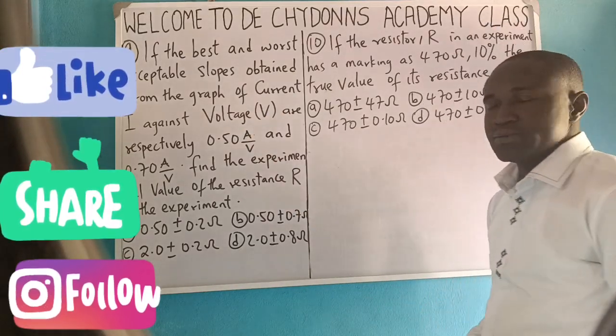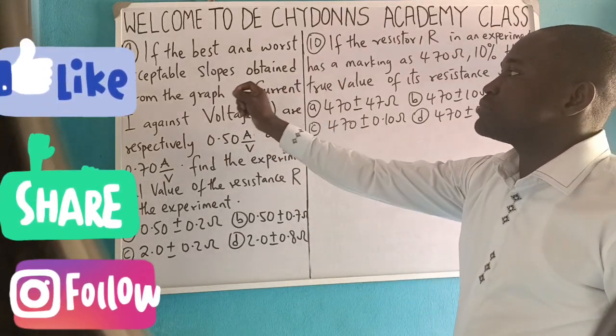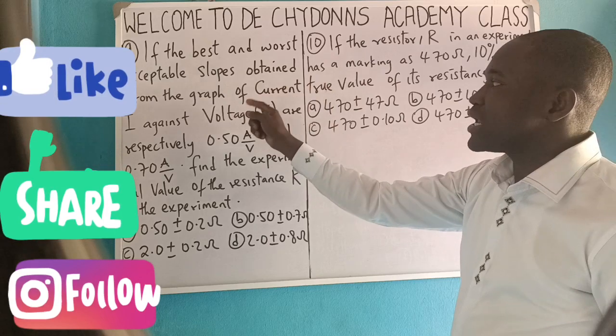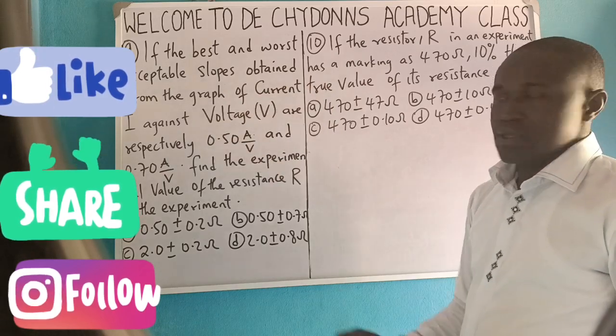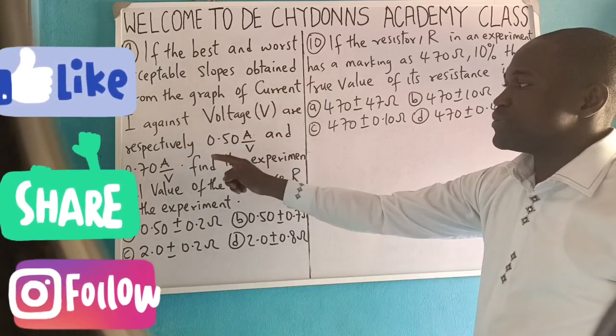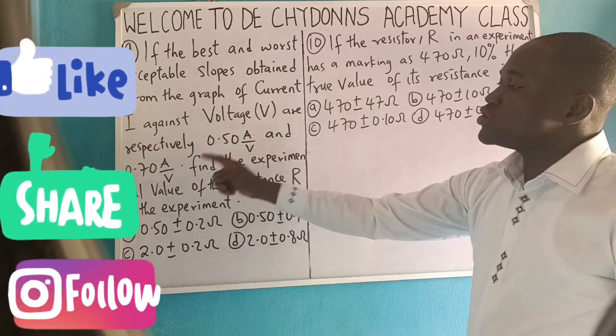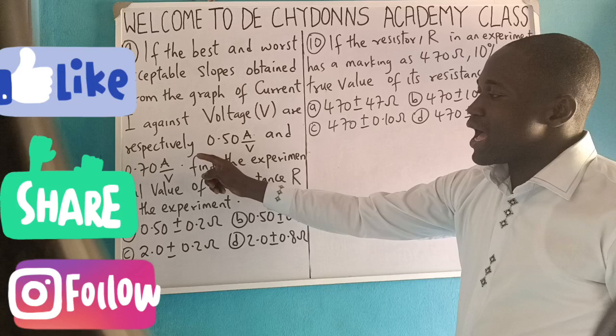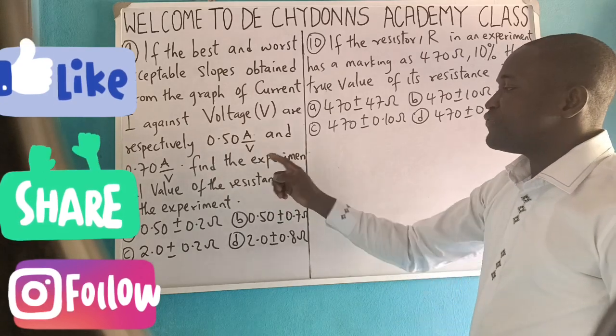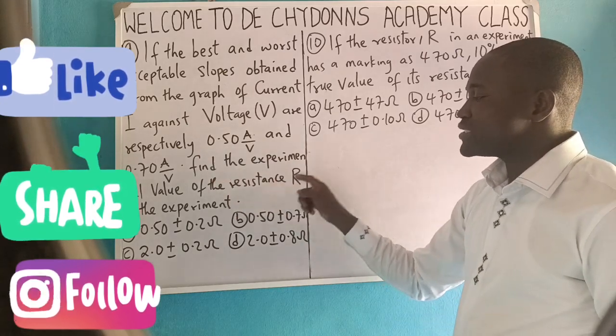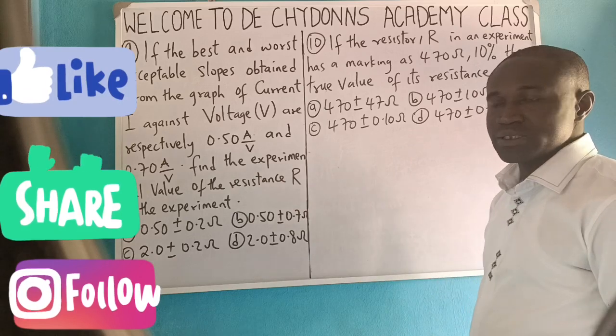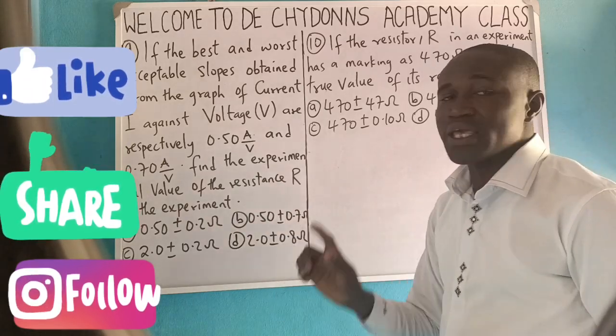Let's solve question 9. If the best and worst acceptable slopes obtained from the graph of current I against voltage V are respectively 0.5 amps per volt and 0.7 amps per volt, find the experimental value of the resistance R in the experiment and these options are given to us.